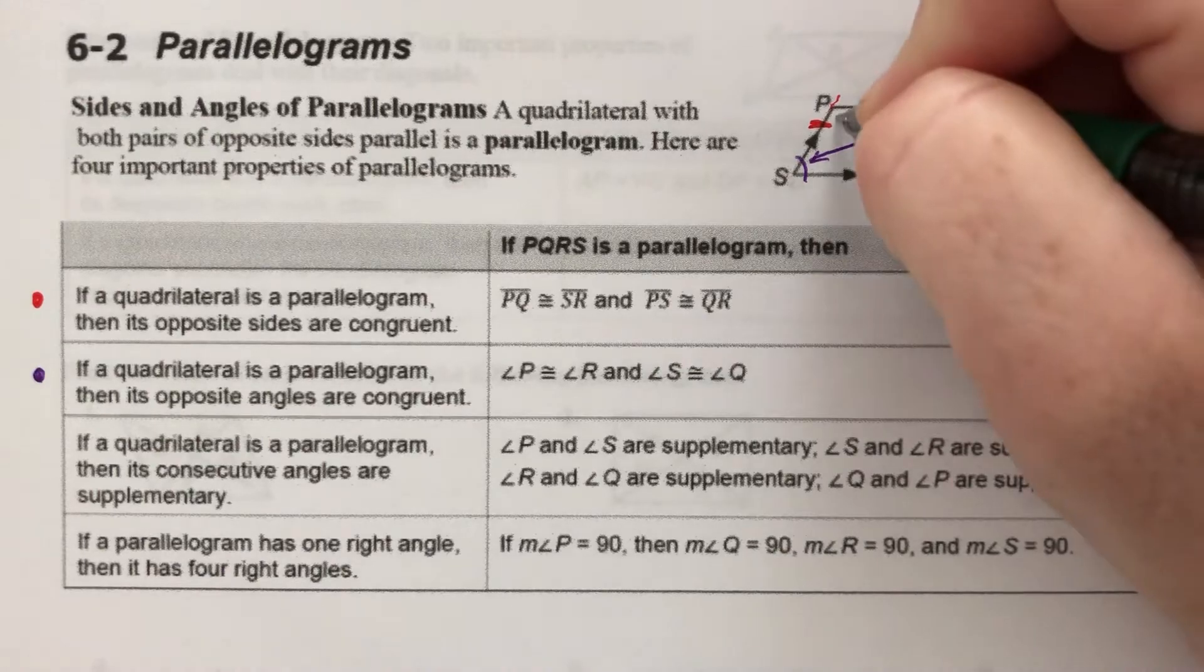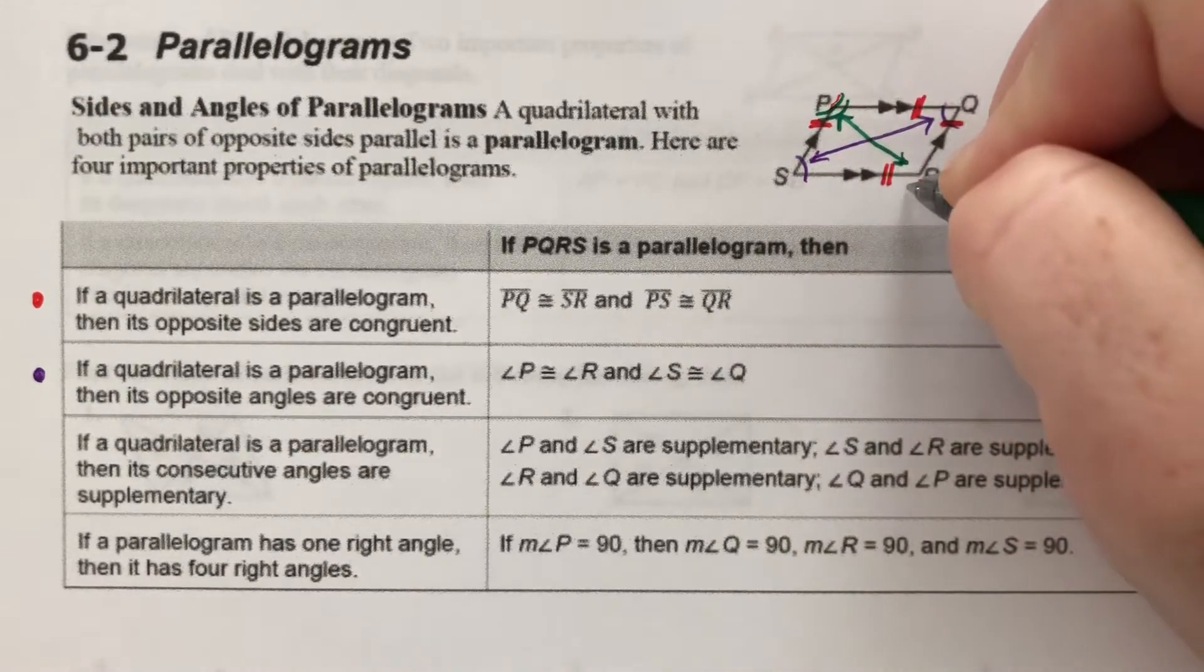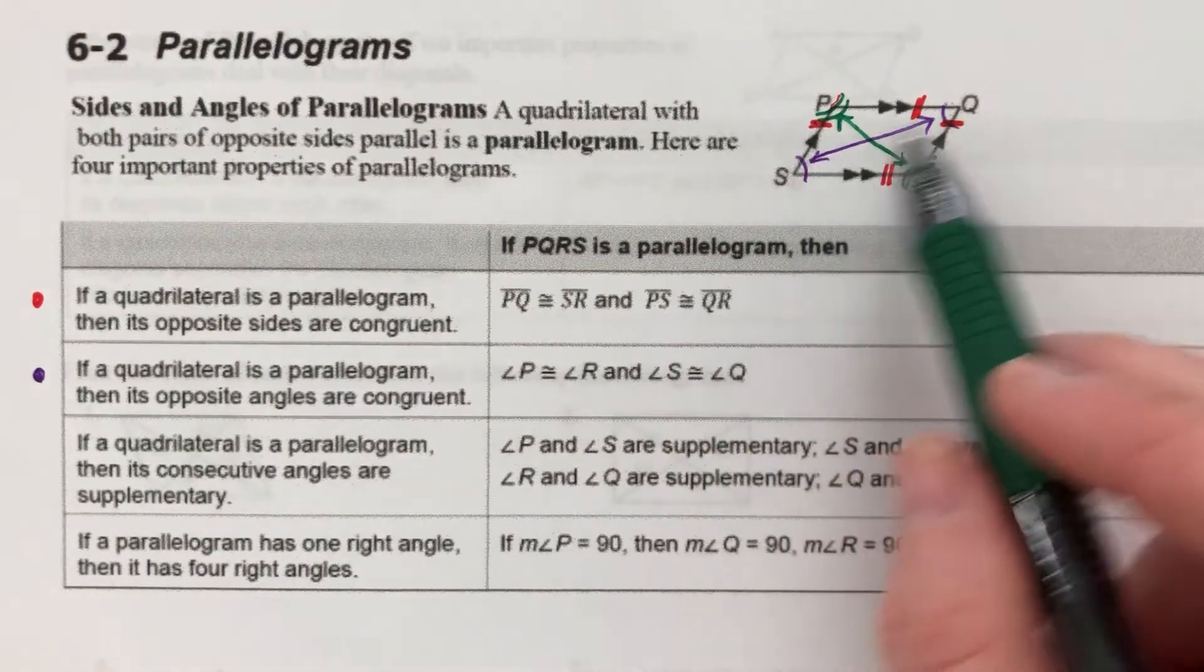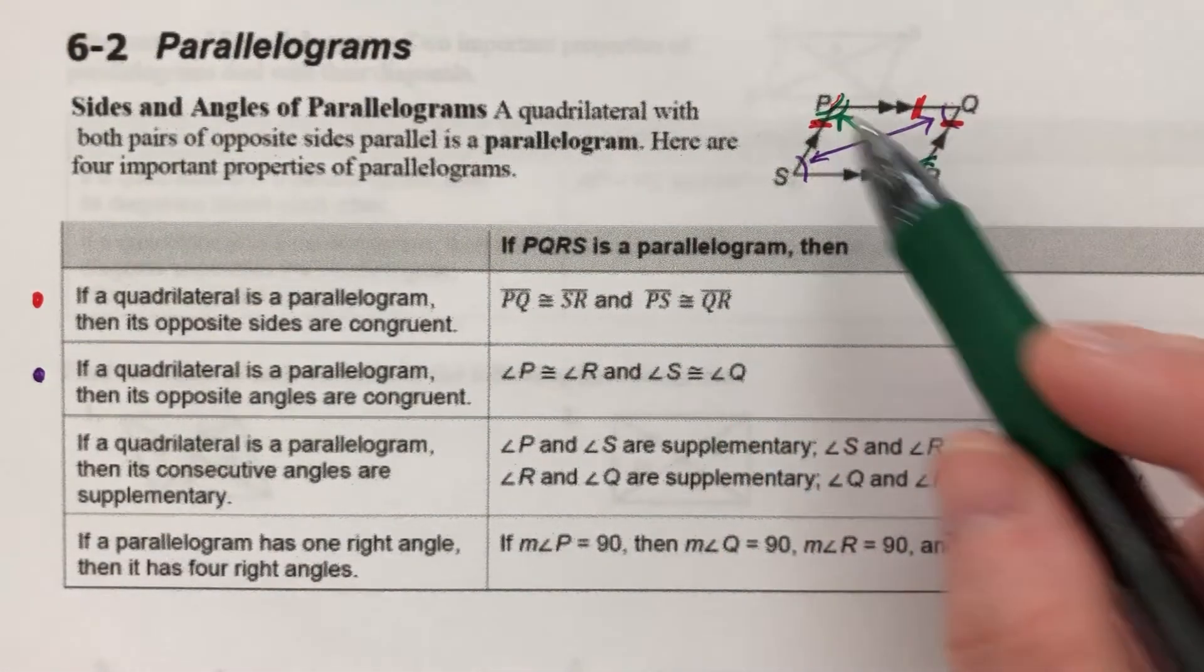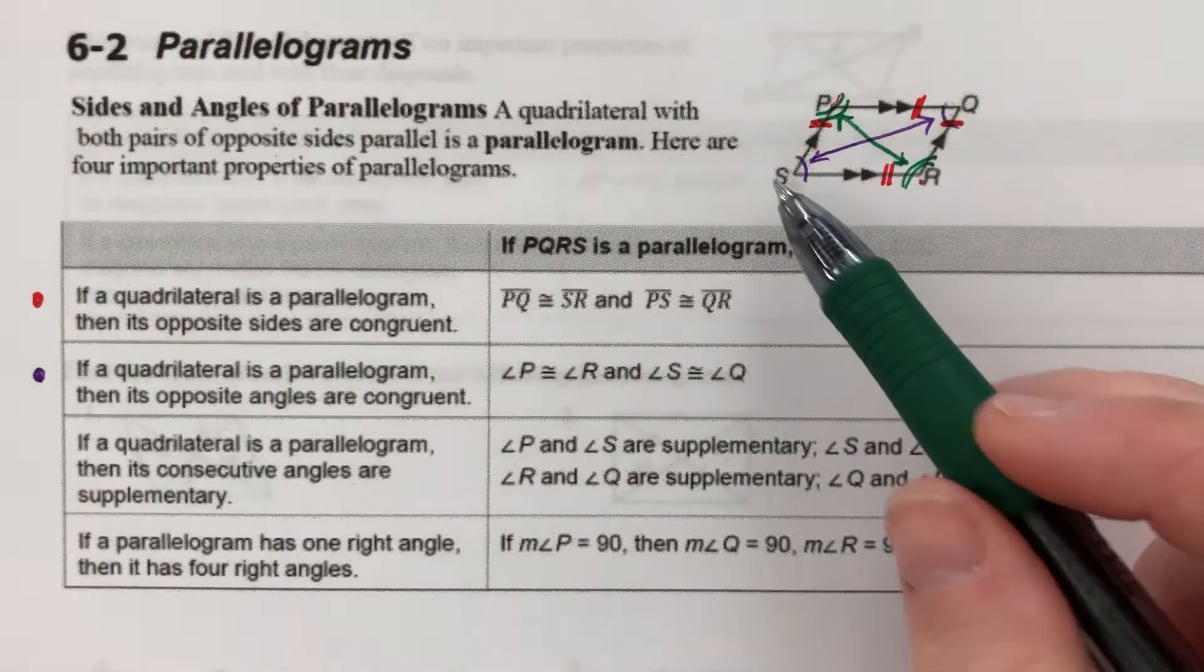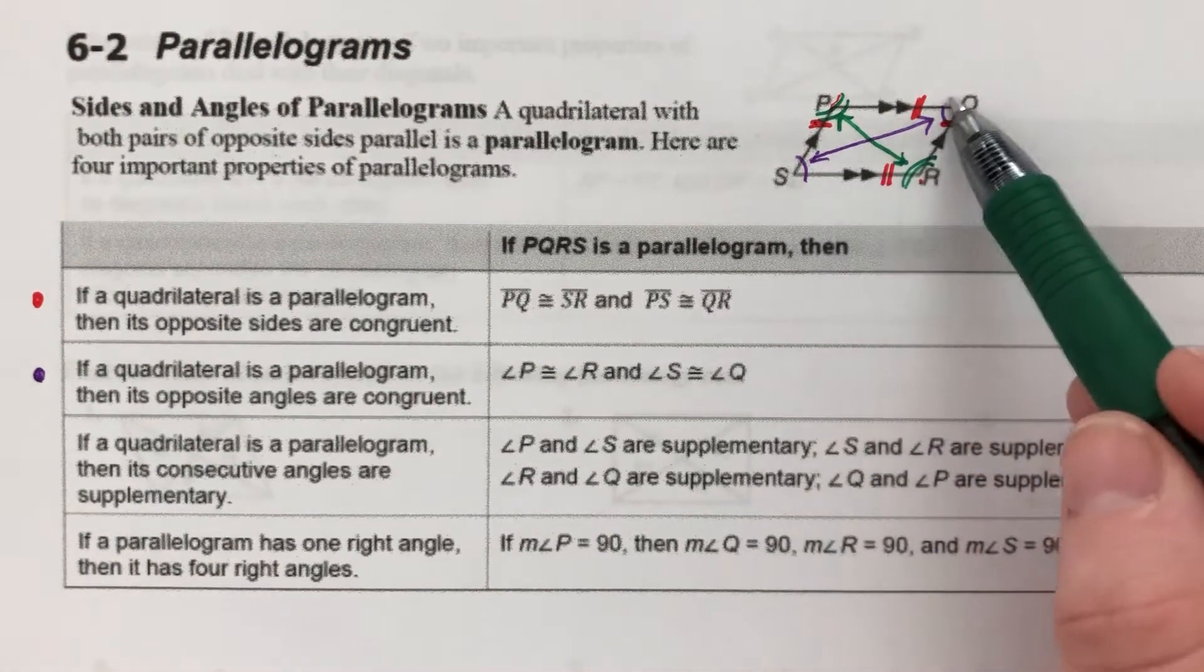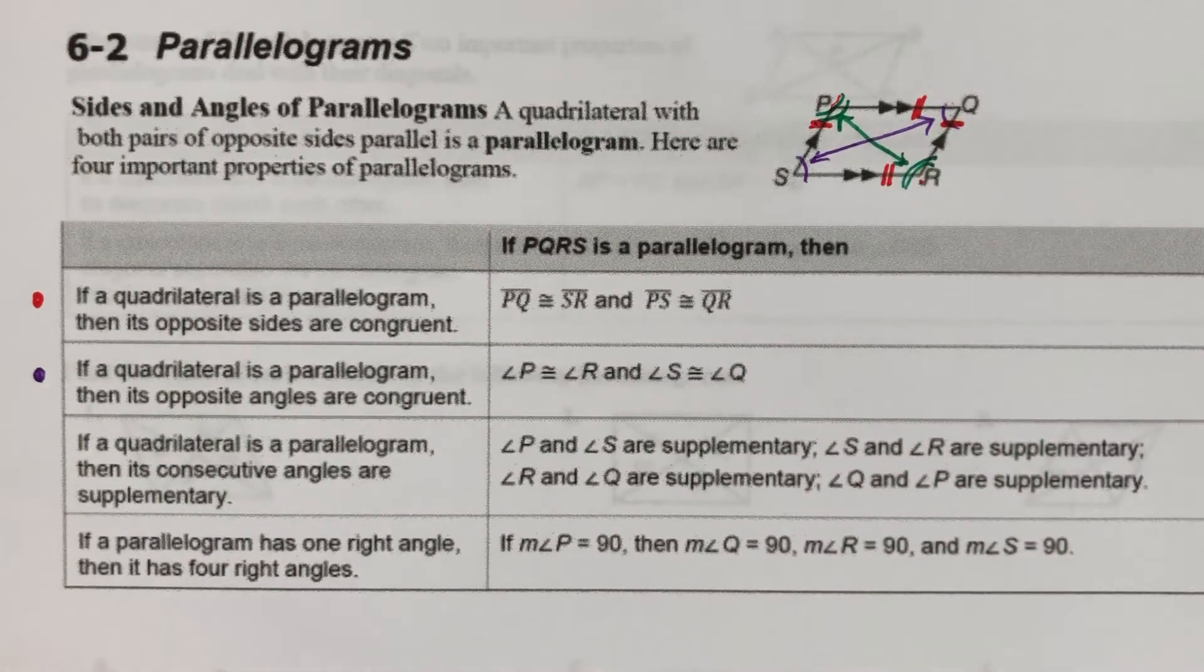Now, P and R aren't necessarily the same size as S and Q, but they are the same size as each other. And S and Q are the same size as each other. So opposite angles, diagonal angles, are congruent.